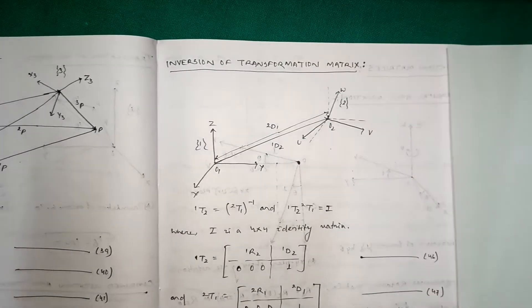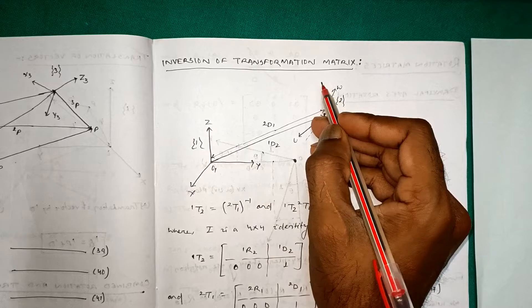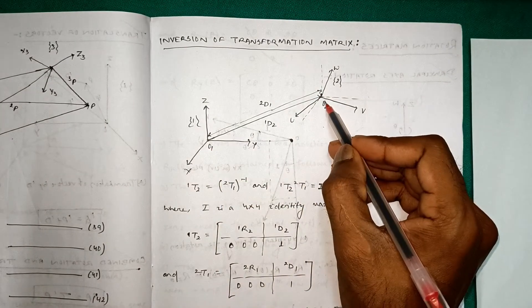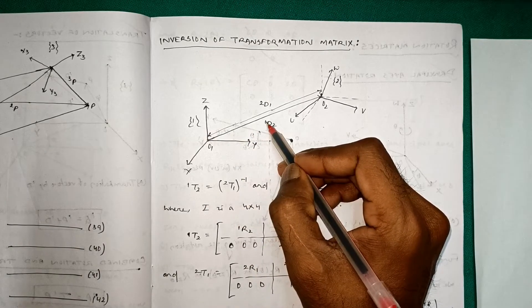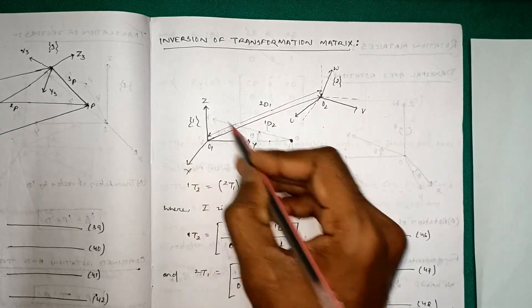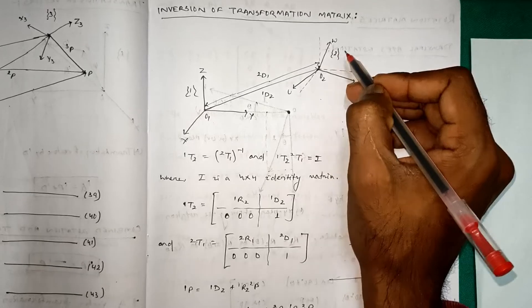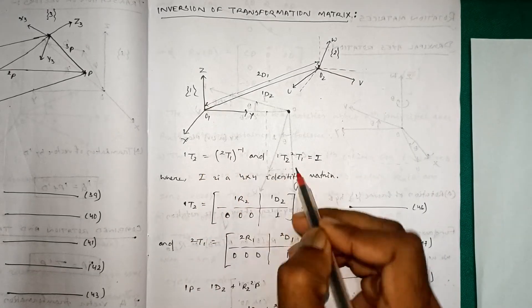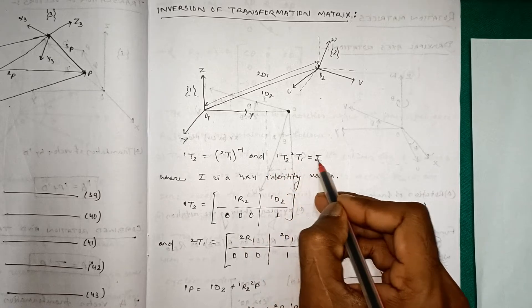Next, we will see the inversion of the transformation matrix. Here the first origin is o1 and the second one is o2. This distance is 1d2, which we also call 2d1. This is xyz frame 1 and uvw frame 2. So 1t2 is equal to 2t1 inverse, and 1t2 times 2t1 is equal to I — the 4×4 identity matrix.